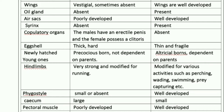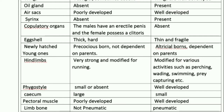Copulatory organs are utilized by both males and females for insemination. For example, in humans the penis is the male copulatory organ and the vagina is the female copulatory organ. In Ratitae, males have an erectile penis and females possess a clitoris. In Carinate, copulatory organs are absent.